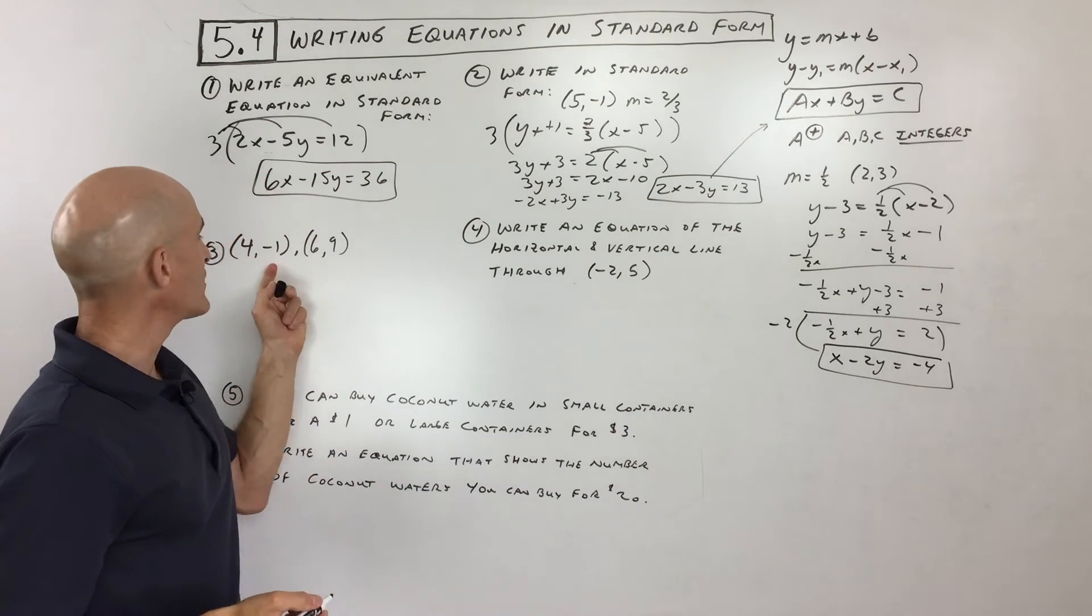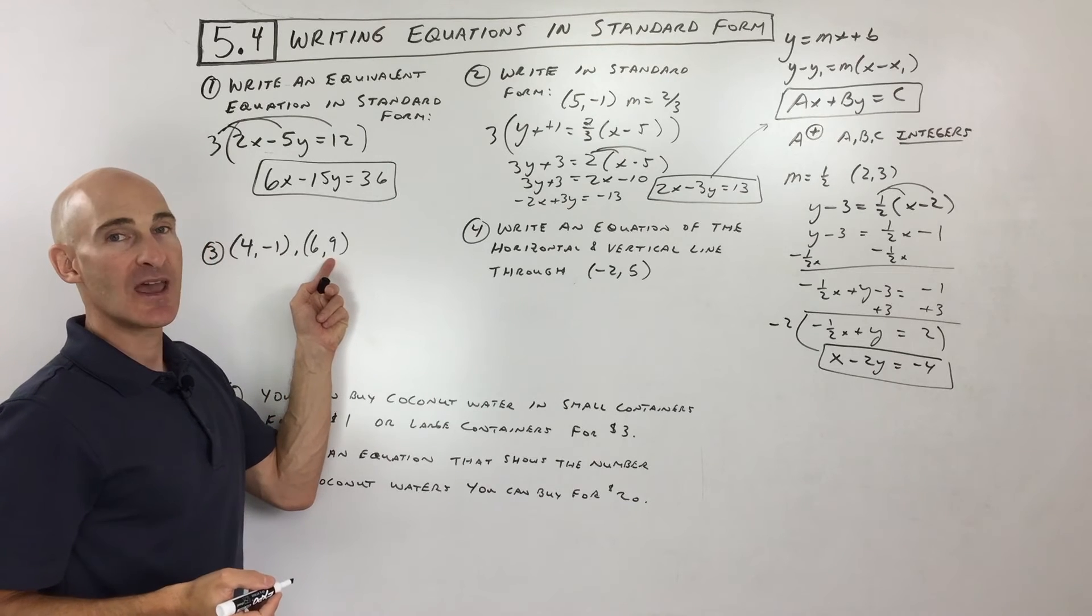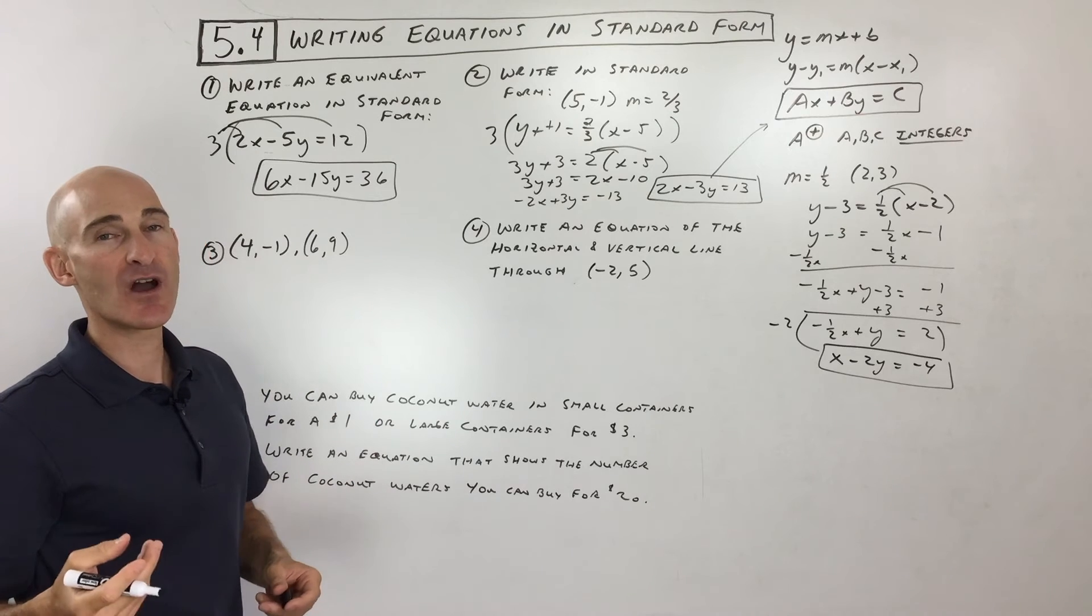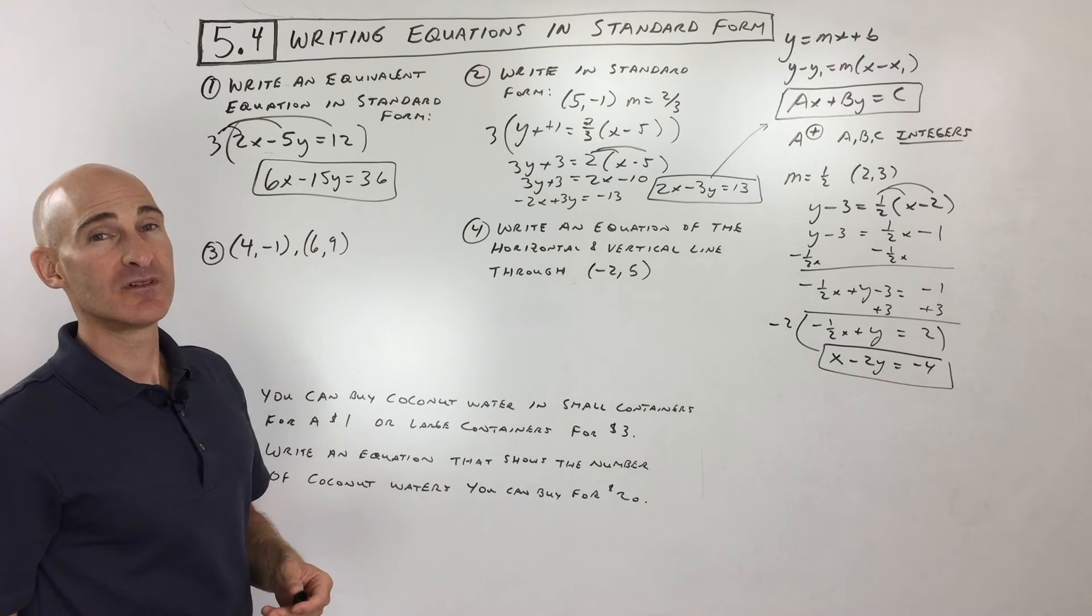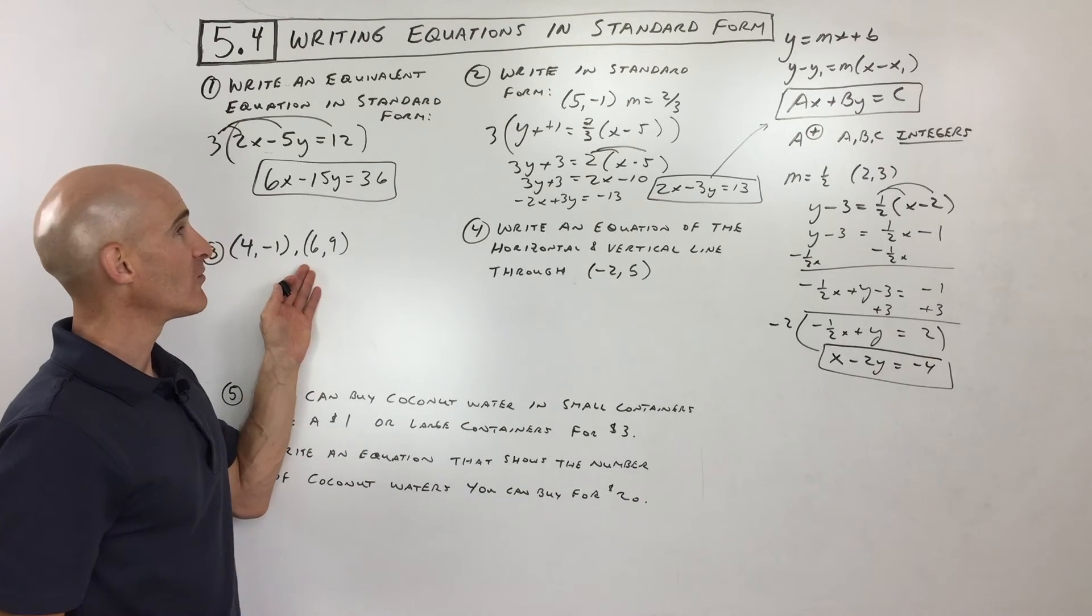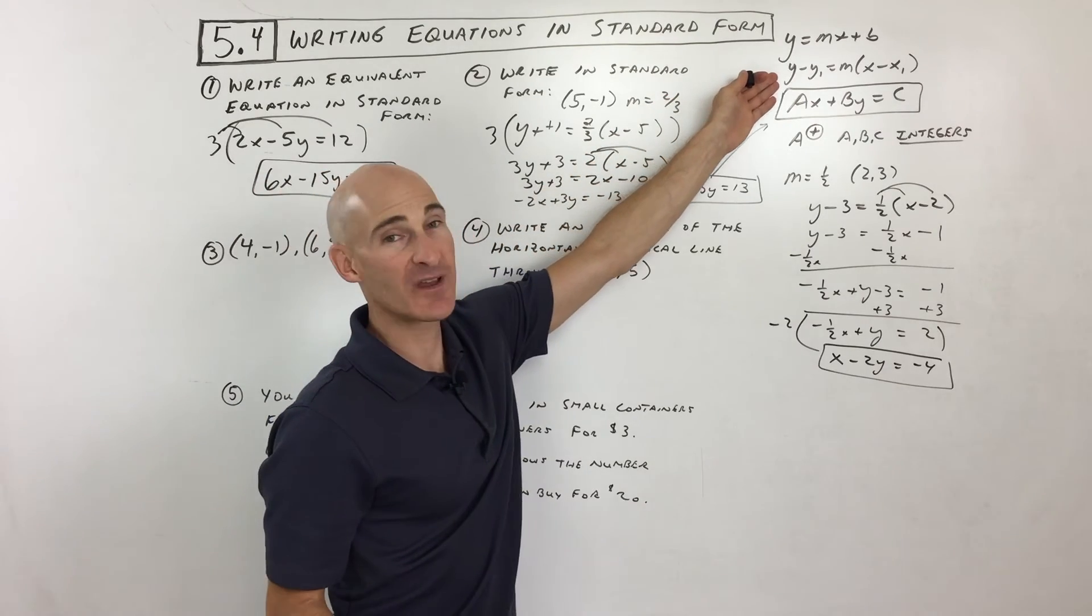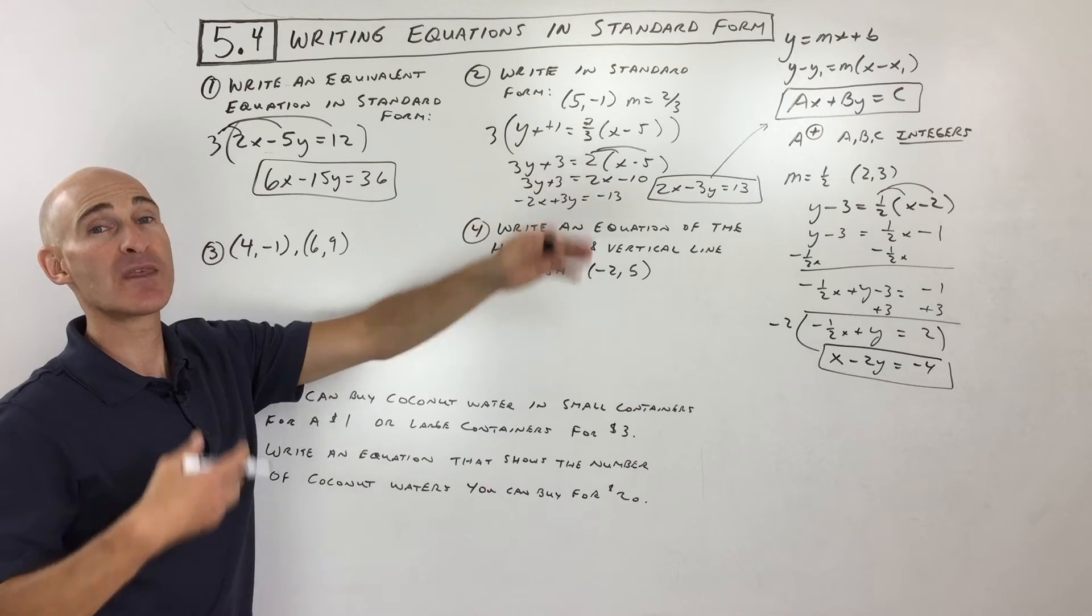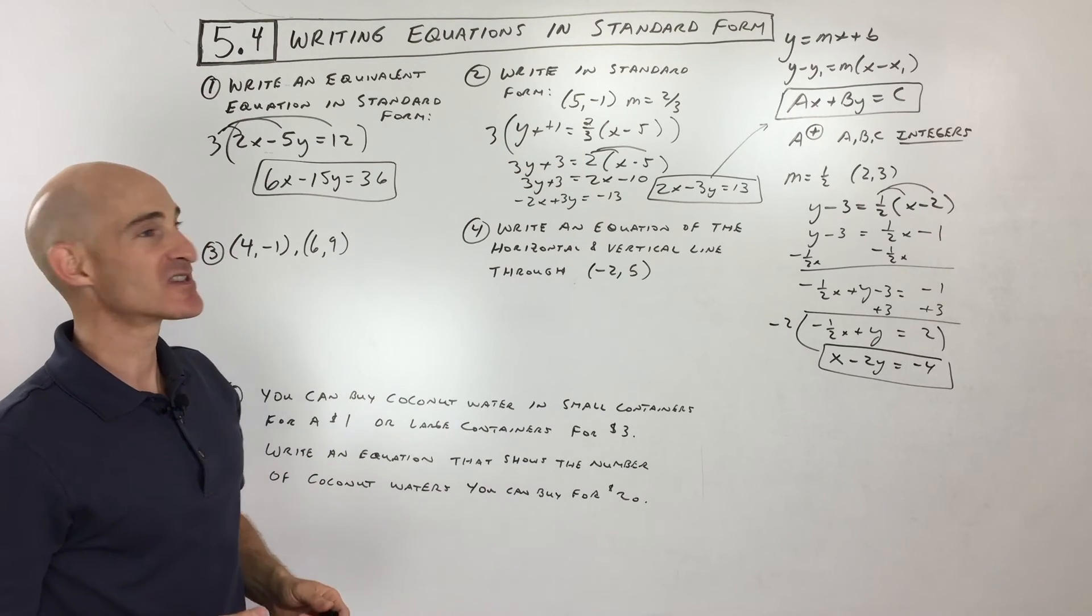Okay, let's look at number 3. Now this one, they give us two points, 4 comma negative 1 and 6 comma 9. So the key thing here is we're going to have to figure out what is the slope. And then I probably would use the point slope form again, either using this first point or the second point to put it in point slope form. Then we can rearrange it into the standard form.